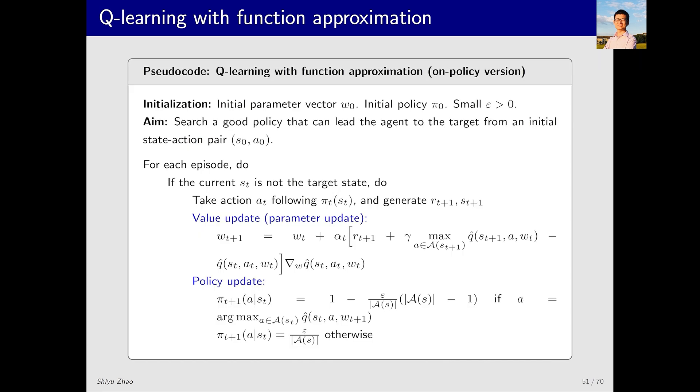Next we present the pseudocode for Q-learning. It's worth noting that we'll first give an on-policy pseudocode, and later when we introduce deep Q-learning we'll give an off-policy version. Since Q-learning can have both on-policy and off-policy implementations, I separate these two algorithms to help you understand how to implement on-policy and off-policy algorithms. Here we consider the problem of starting from one state and finding the target state. For each episode we do the following: if the current state is not the target state, we proceed with the following steps. The first step is to collect samples. In the current state S_t, I take action A_t based on the current policy pi_t, then I interact with the environment and observe R_t+1 and S_t+1.